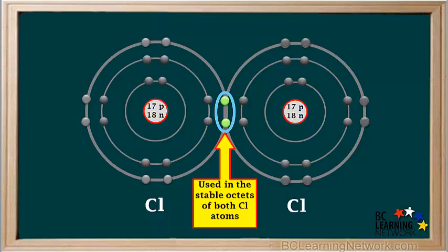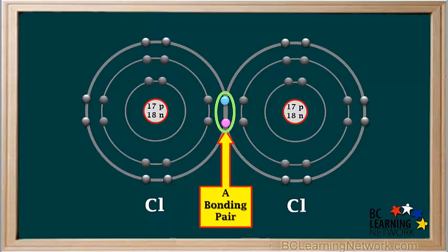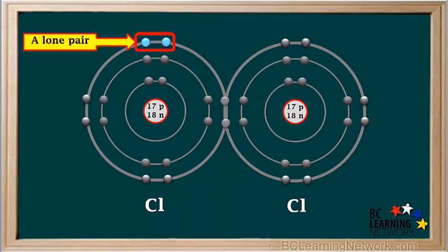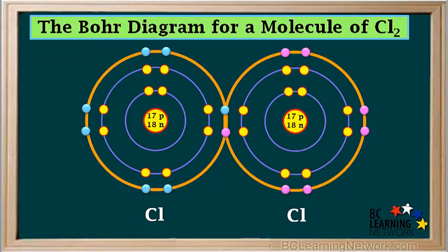Note that these two shared electrons are part of stable octets of both of the chlorine atoms. The pair of electrons being shared in a covalent bond is called a bonding pair. A pair of electrons that is not being shared for a covalent bond is called a lone pair. So here is the Bohr diagram for a molecule of Cl2 with a covalent bond between the two Cl atoms.